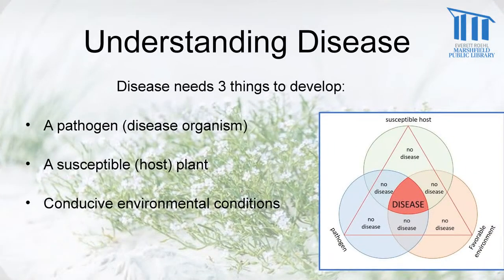A disease needs three things to develop. It has to have a pathogen, which is a disease organism, and that can be something like a fungus or a bacteria. And then it has to have a susceptible host plant. Diseases are pretty choosy about which plants they use as hosts. So you can have a disease organism in your garden, but if you're not growing a host plant that's able to get that disease, you won't have it.